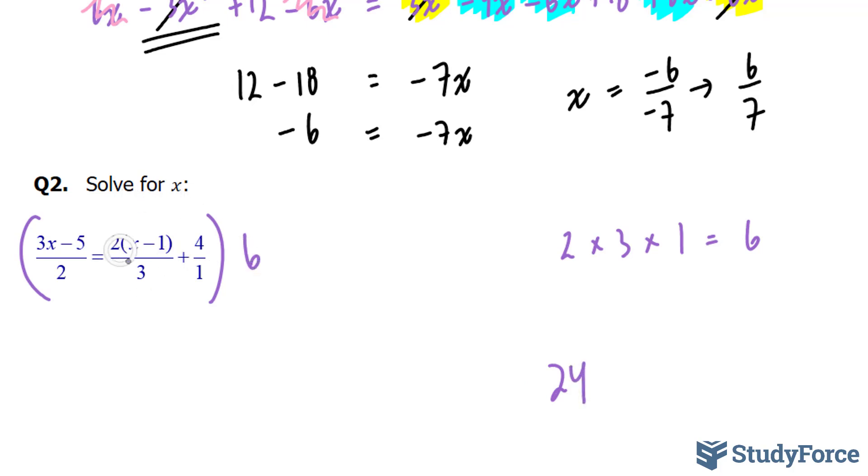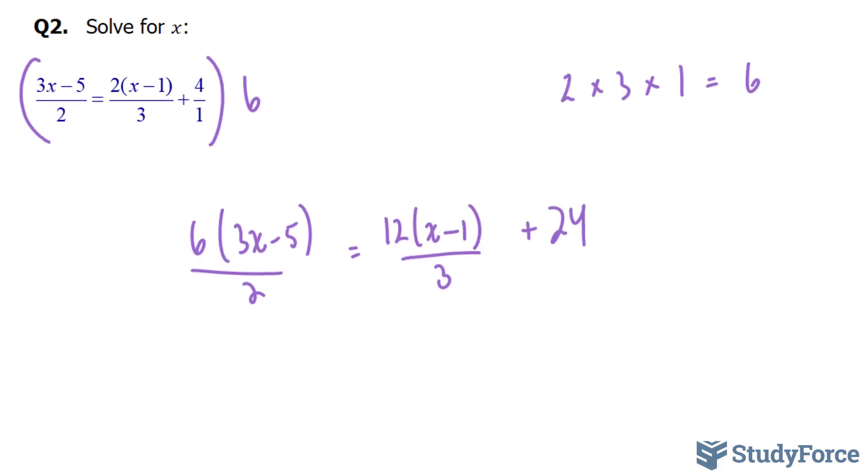6 times this term gives us, and remember it's positive 24, 12x minus 1 over 3. So what happened was I took this 6 and I multiplied it by this 2 and then left everything the way it was. And then 6 times these two terms gives us 6 bracket 3x minus 5 over 2.